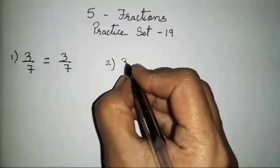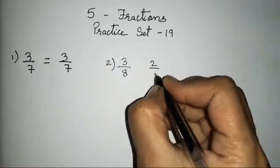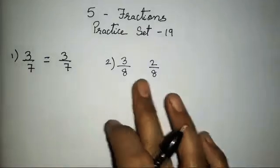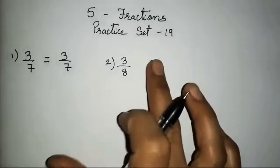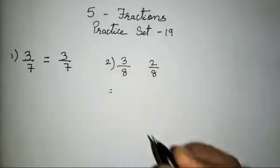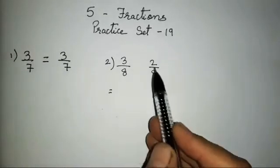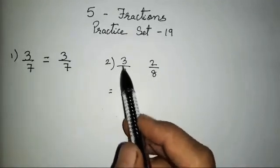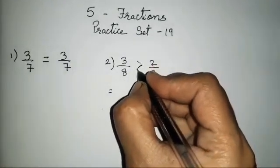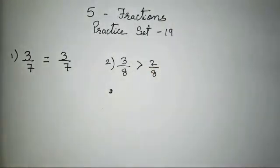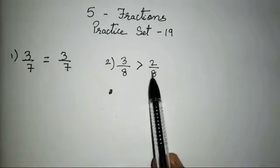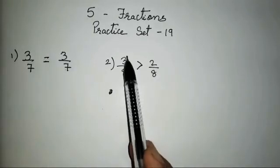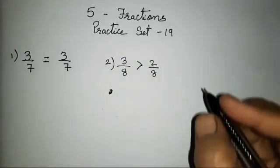The second sum is 3 upon 8 and 2 upon 8. The denominators are equal, so we have to find whether 3/8 or 2/8 is greater. The numerators are different, so we check which numerator is greater — 3 is greater, so the greater sign goes here. When numerators and denominators are both the same, put equal to. When denominators are same but numerators differ, check which numerator is bigger.